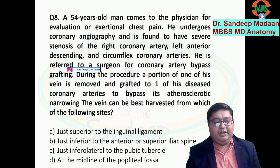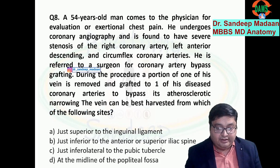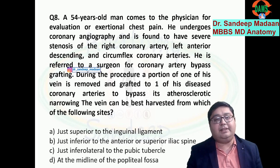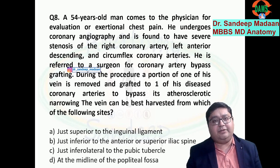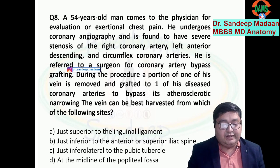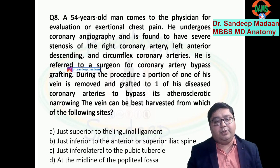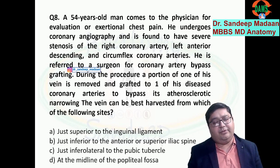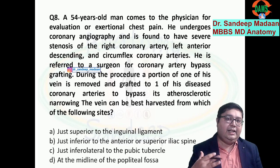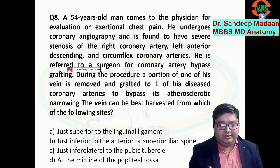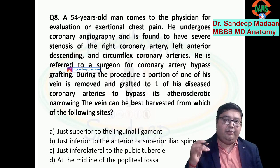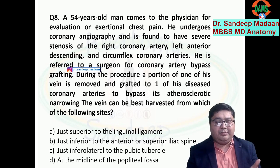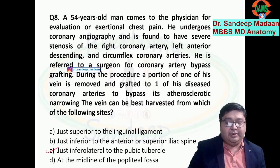This patient needs a bypass for limb involvement. Nowadays an arterial graft is preferred, but if the surgeon opts for a vein graft, the great saphenous vein can be used. It travels along the medial leg and medial thigh, terminating just inferolateral to the pubic tubercle at the saphenous opening, where it pierces the cribriform fascia to reach the femoral vein. It is harvested from the medial leg or that position — answer is C.